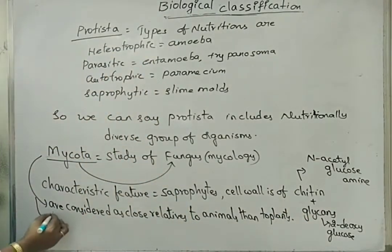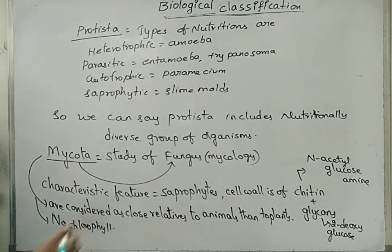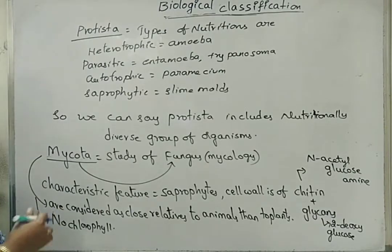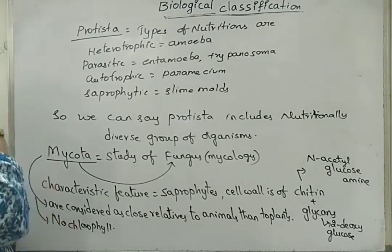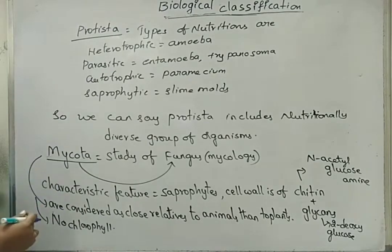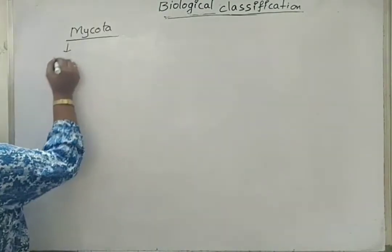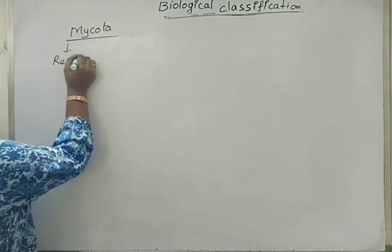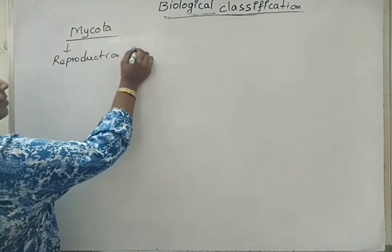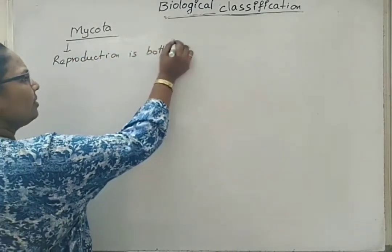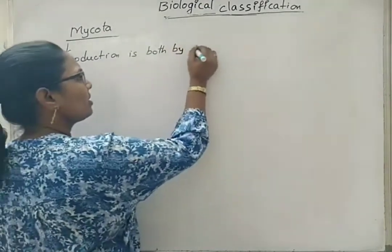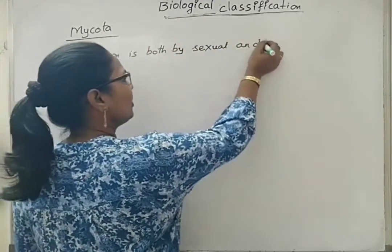They do not have chlorophyll, so there is no chlorophyll. Since they are completely depending on other organisms, they are heterotrophs. But under heterotrophs, they are specially read as saprophiles. Fungus reproduction is both by sexual and asexual mode.